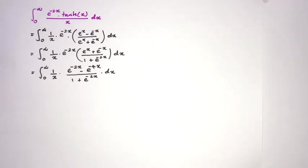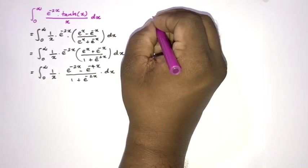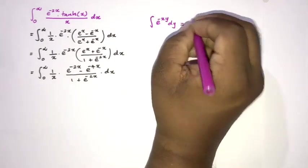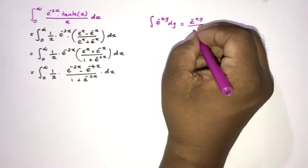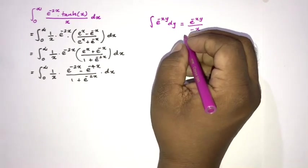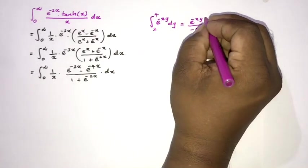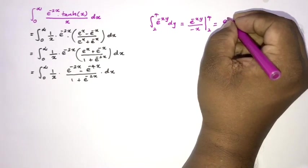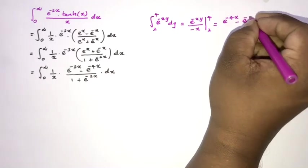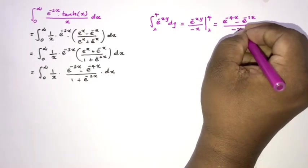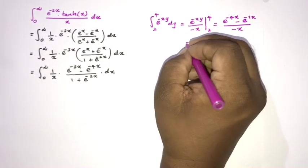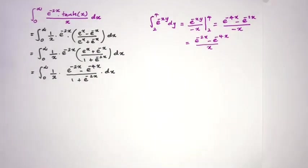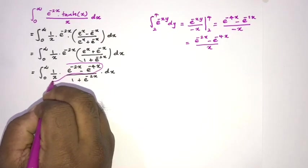For better understanding, consider an auxiliary integral: if we integrate e to the minus xy with respect to y, we get e to the minus xy over minus x. Evaluating from 2 to 4 and multiplying numerator and denominator by minus one, we obtain (e to the minus 2x minus e to the minus 4x) over x.